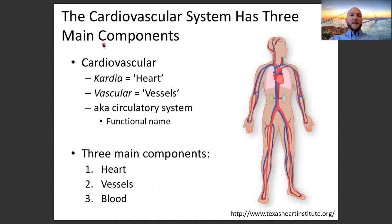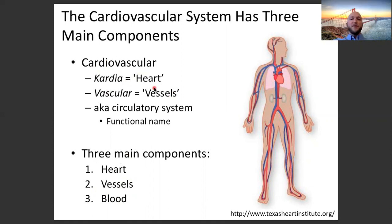The cardiovascular system has three main components: the heart, vessels, and blood. Looking at the word cardiovascular — it's an anatomical name. Cardia refers to heart, vascular refers to vessels. Knowing the roots of words and being able to break them down is really important. A functional name for this system is the circulatory system — it circulates blood and all of the contents within that blood.